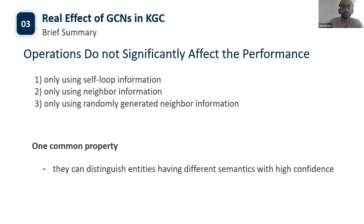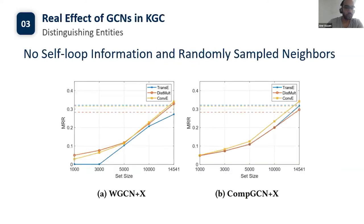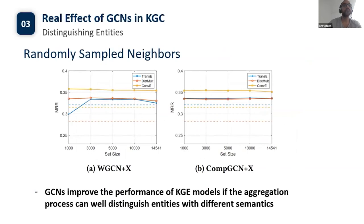These three cases share one common property: they can distinguish entities having different semantics with high confidence. To find out whether this property is necessary for the performance gain, we conduct experiments without self-loop information while randomly sampling neighbors from a given entity set. The results meet our expectations. We also conduct experiments using self-loop information with randomly sampled neighbors, and the figures show that performance is relatively stable when the set sizes vary. This is expected since self-loop information itself can uniquely determine an entity regardless of the neighbor information. In summary, GCNs improve the performance of KGE models if the aggregation process can well distinguish entities with different semantics.